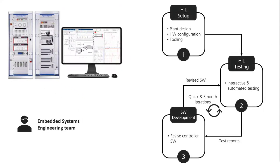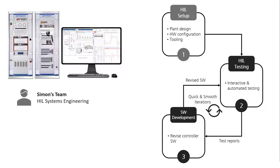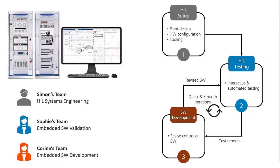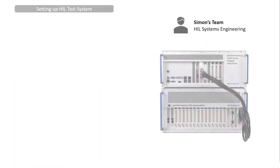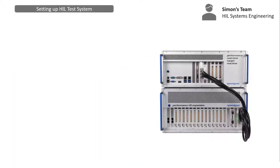Depending on the size of your group and how you organize development of embedded software, the HIL system setup and controller HIL testing can be done by the same or different teams. Let's assume our embedded system group is segmented into three: Simon's team focusing on assembling and setting up new HIL test systems, Sophie's team in charge of running embedded software test campaigns, and Korin's team tasked to develop and revise the embedded software. So the question is: how are we enabling these teams to succeed in their specific tasks?